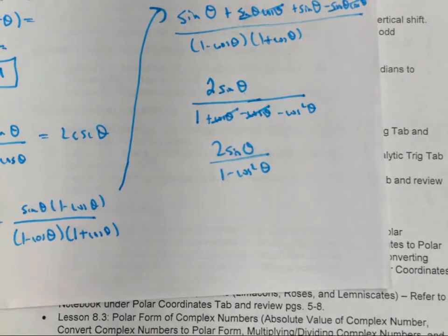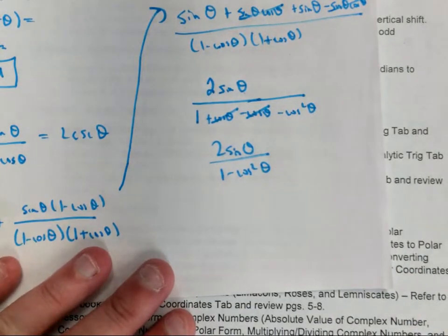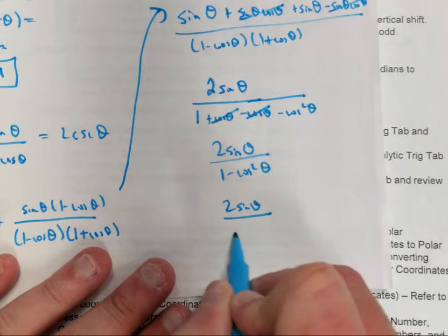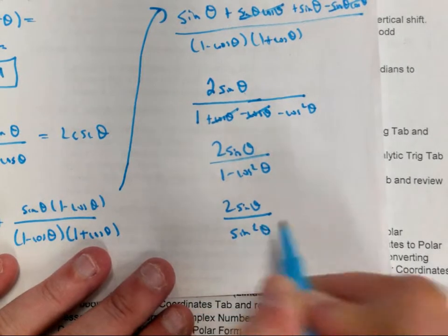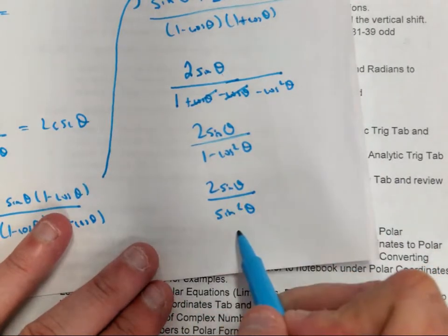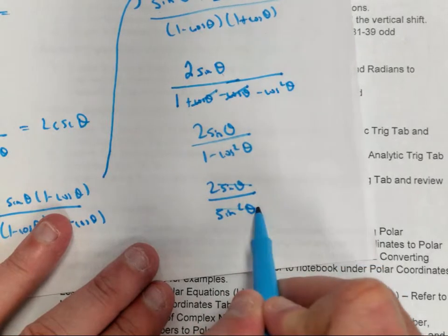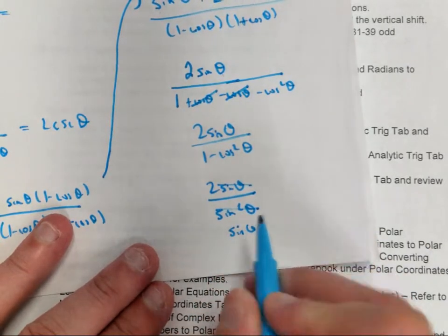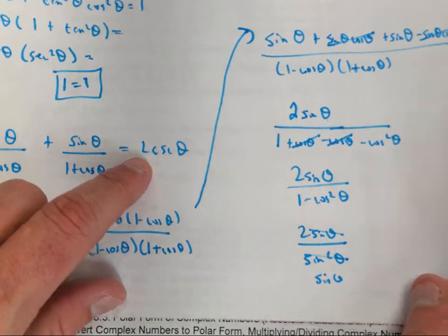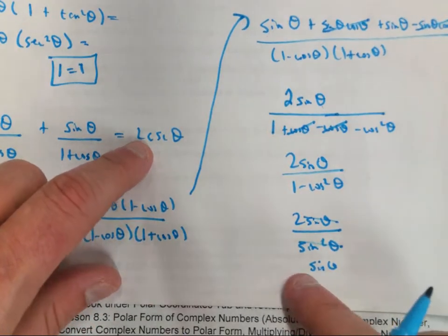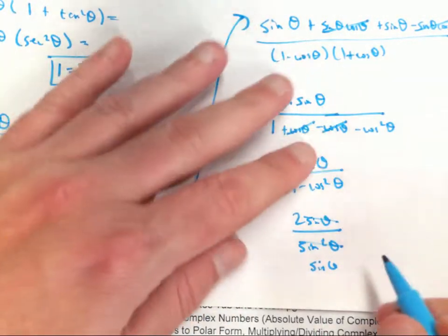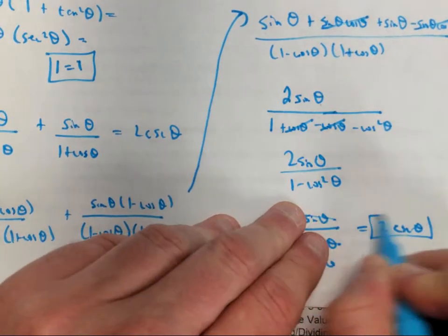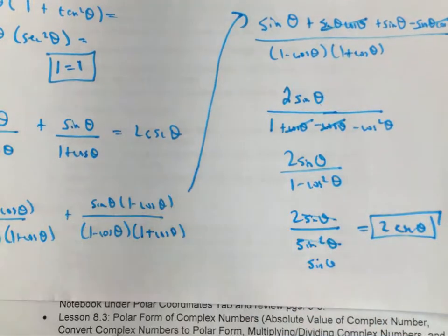What is 1 minus cosine squared equal to? Sine squared. I have a sine and a sine squared — can I take one off both of those? So I'm left with 2 over sine. Well, I was trying to get 2 cosecant. Isn't 2 over sine equal to that? So that equals 2 cosecant theta. You do have one like that on your final.